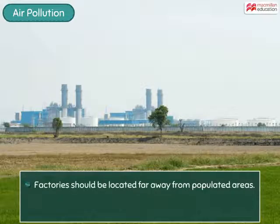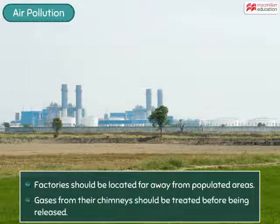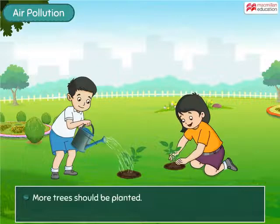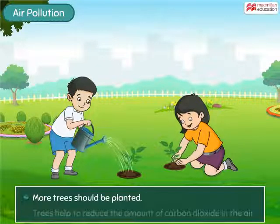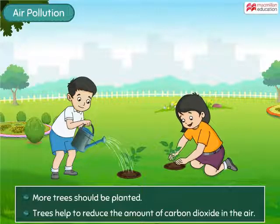Factories should be located far away from populated areas, and gases coming out from their chimneys should be treated before being released into the atmosphere. More and more trees should be planted, as they will help to reduce the amount of carbon dioxide in the air.